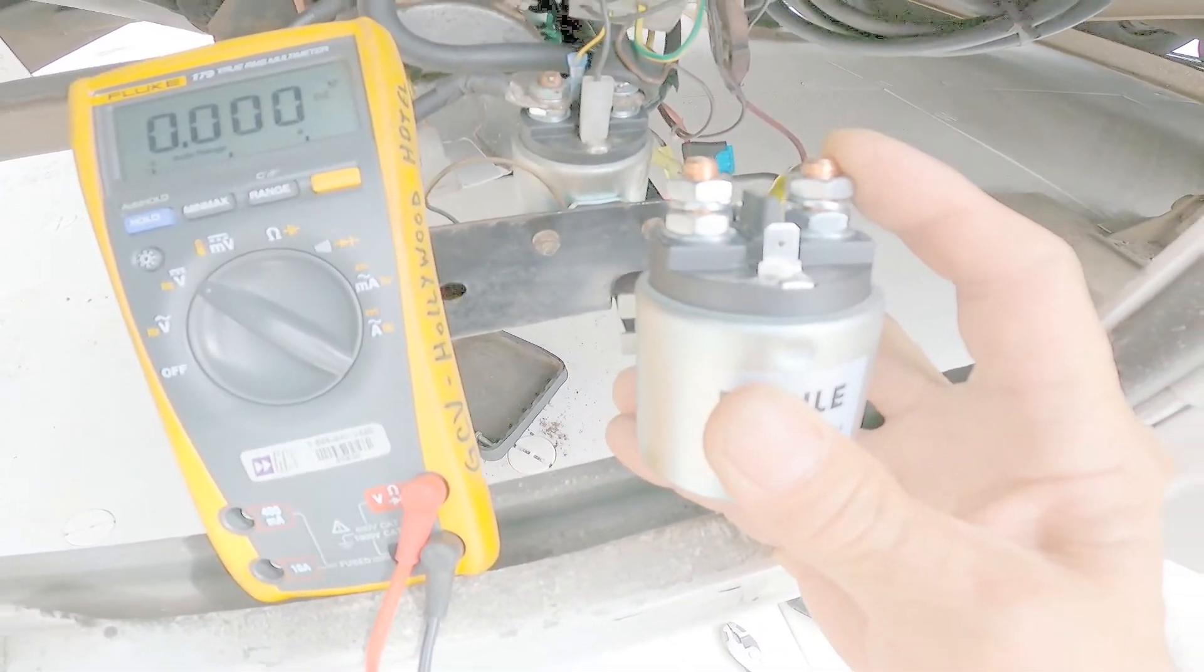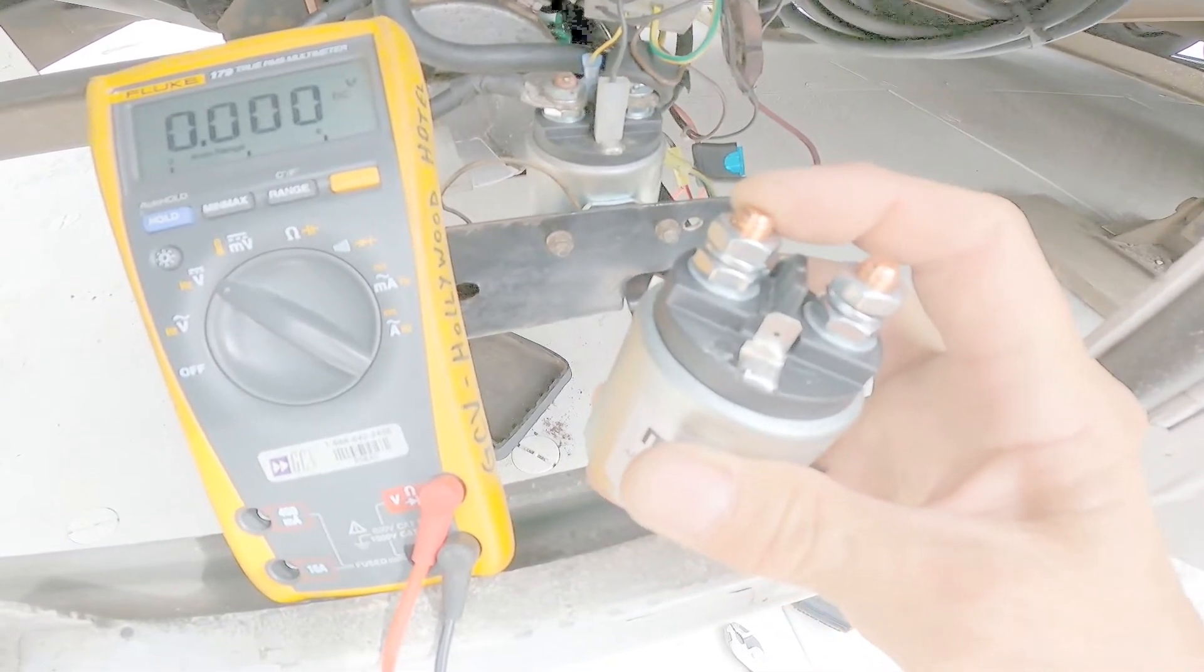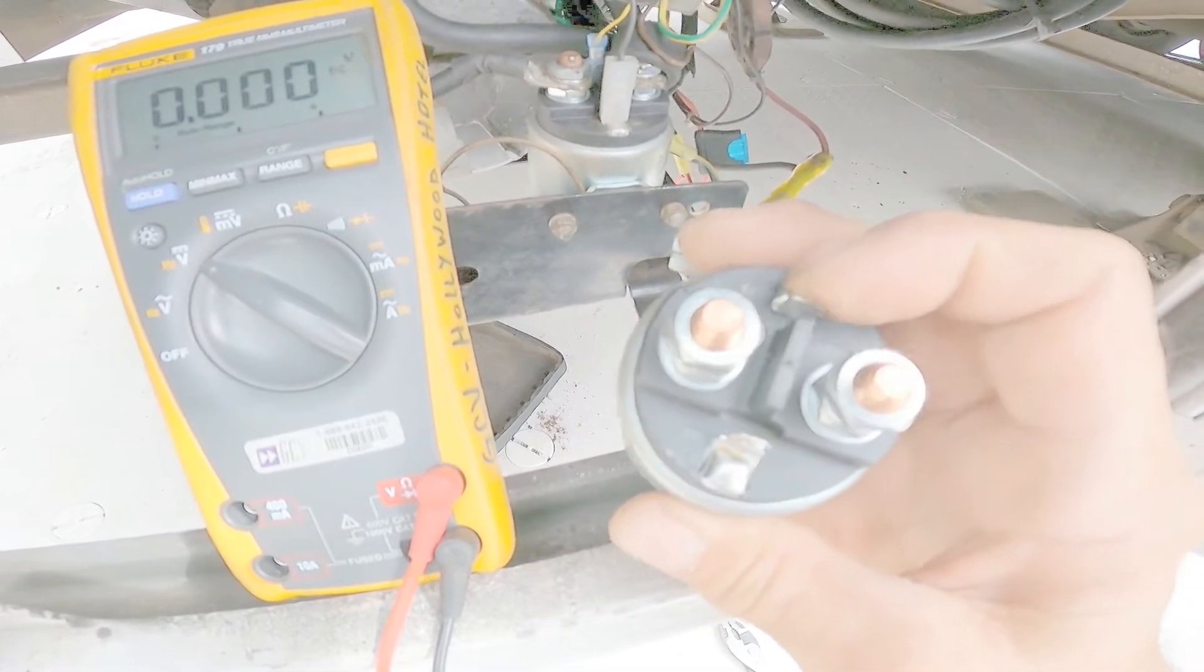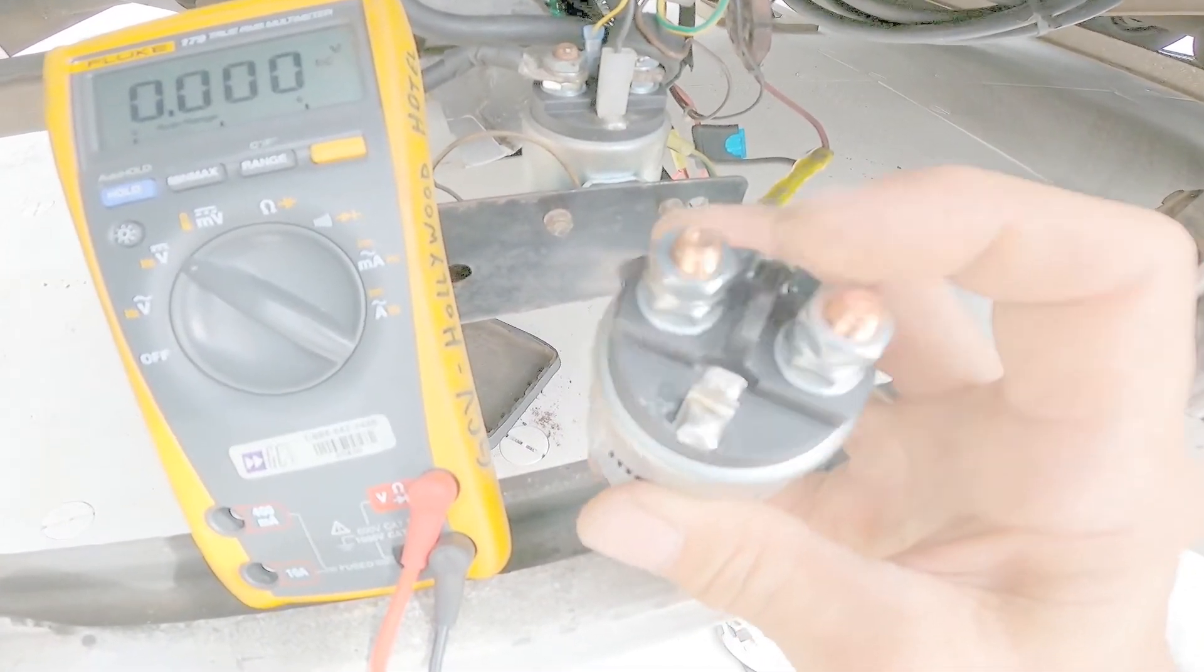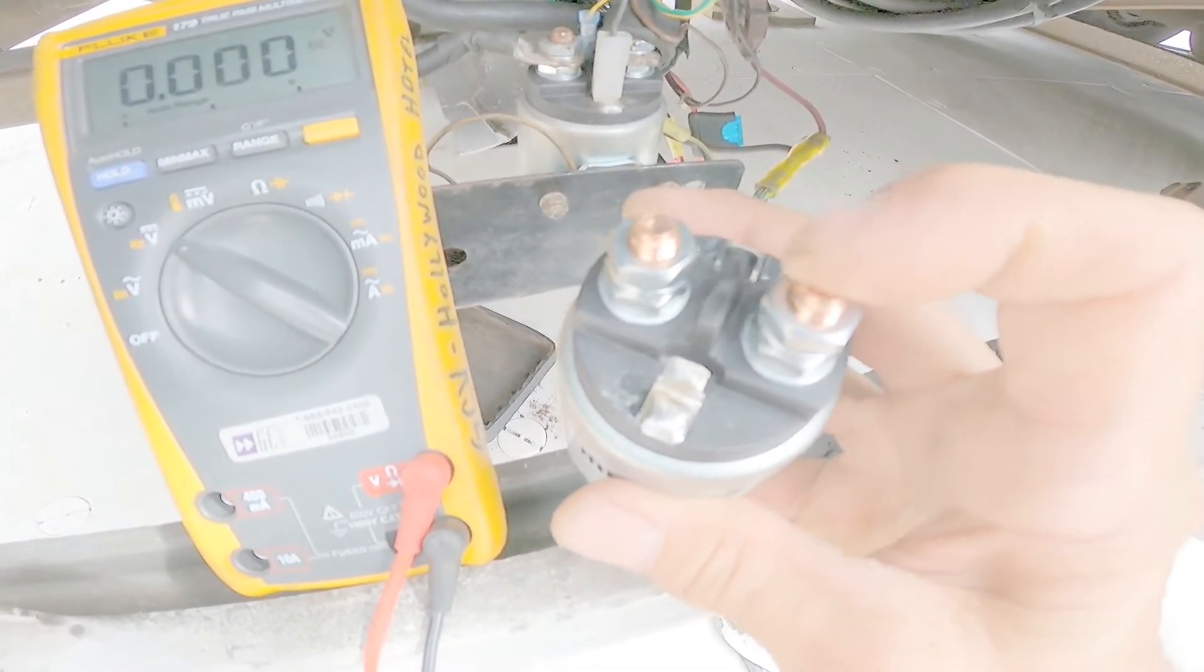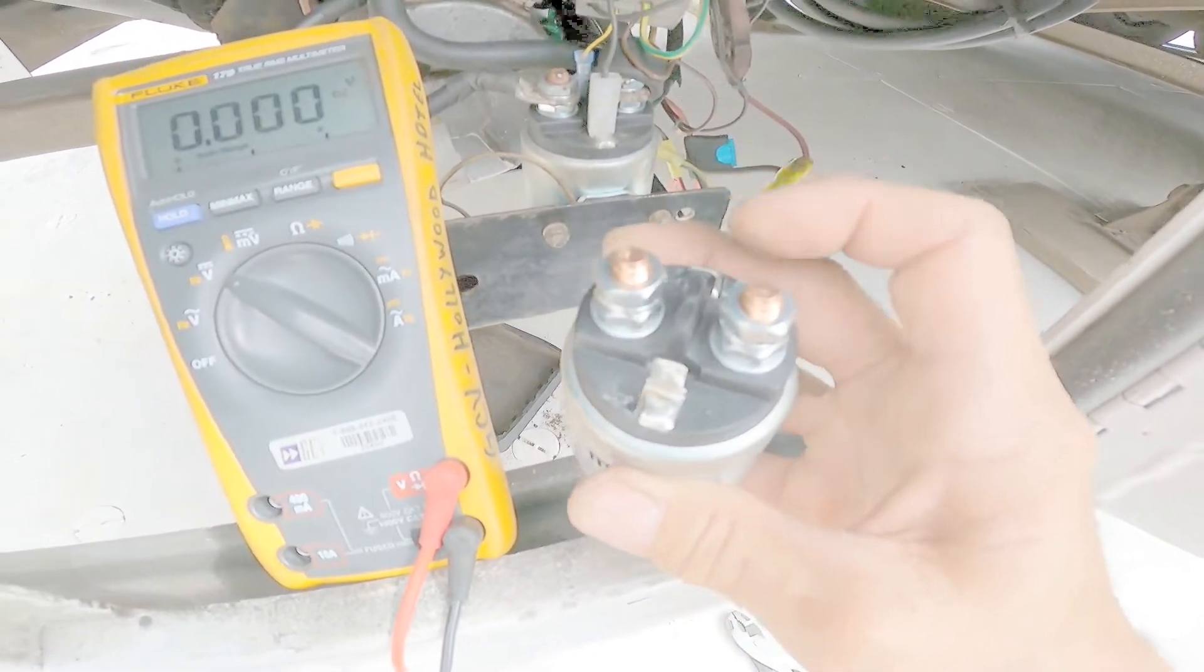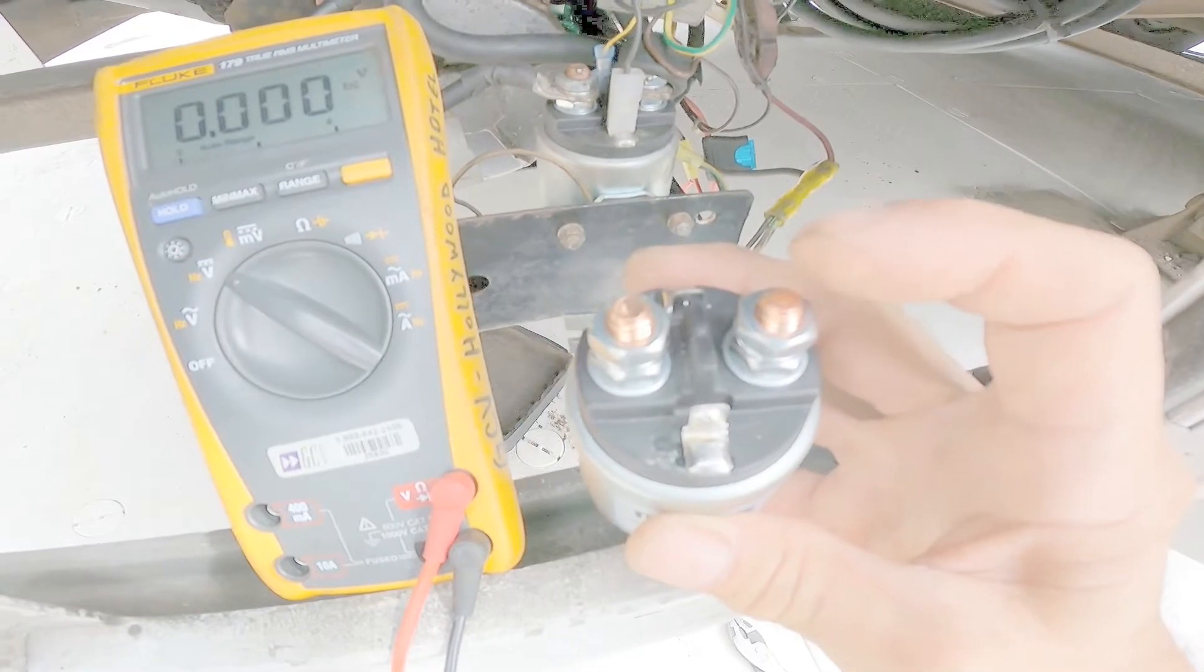Okay, this is a relay that drives the hydraulic pump. On this terminal is where the DC voltage should be coming in and this is the terminal that feeds out to the hydraulic pump. When we apply DC volts to these two smaller terminals, it engages this and it bridges this and sends the high current DC from here to here down to the hydraulic pump.